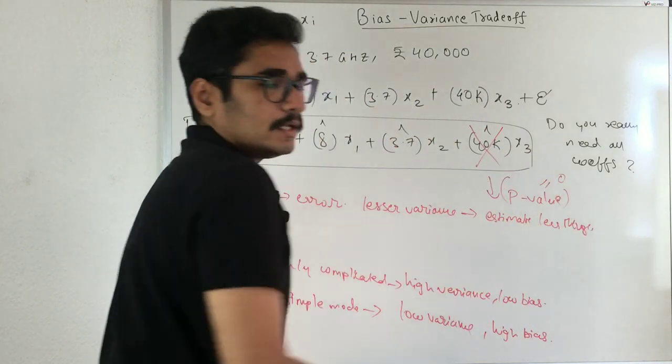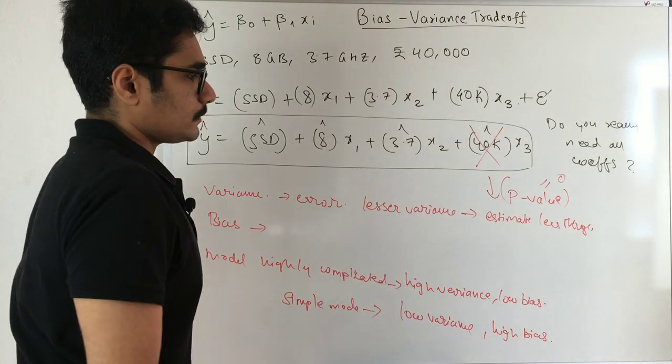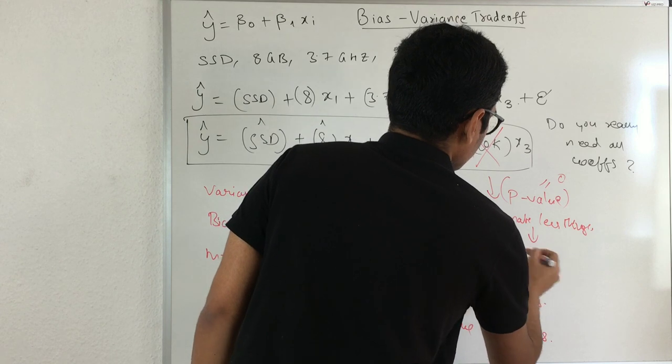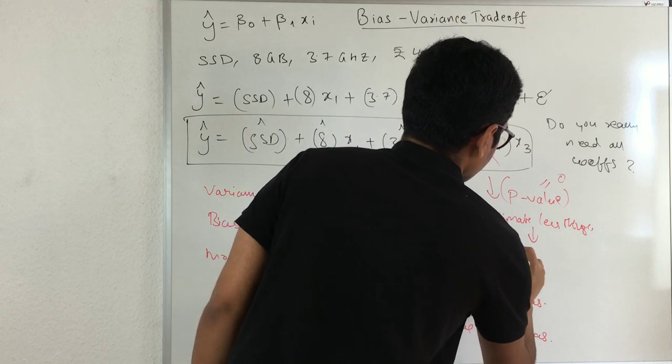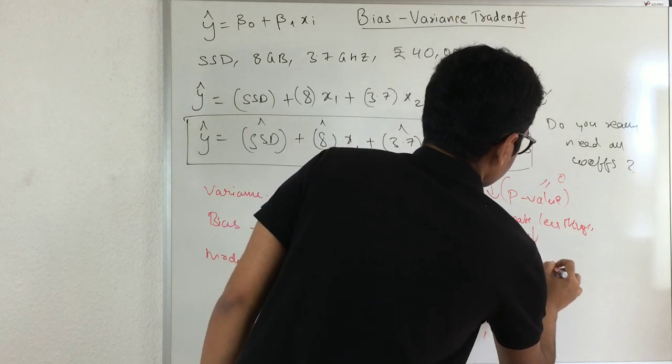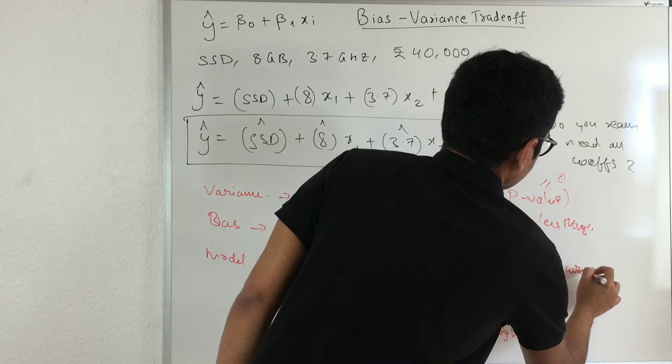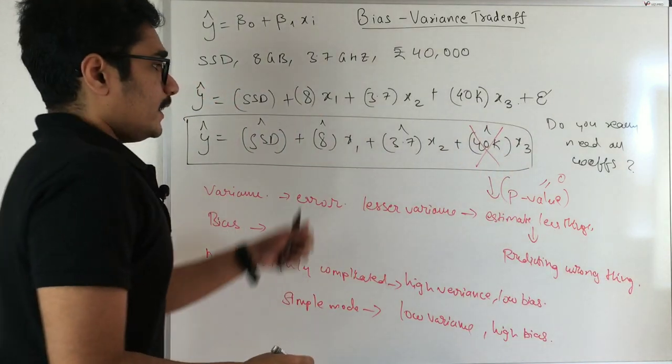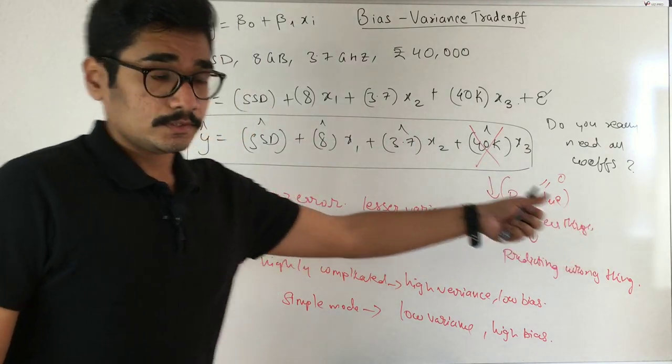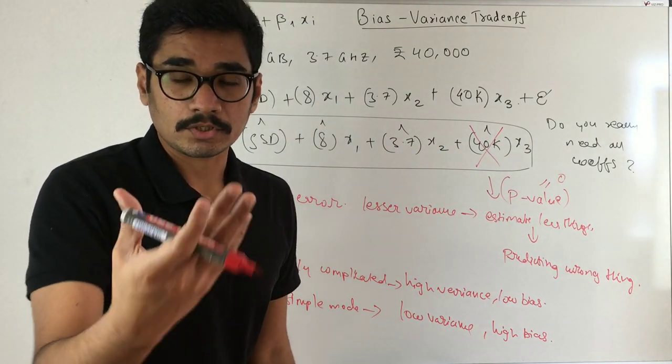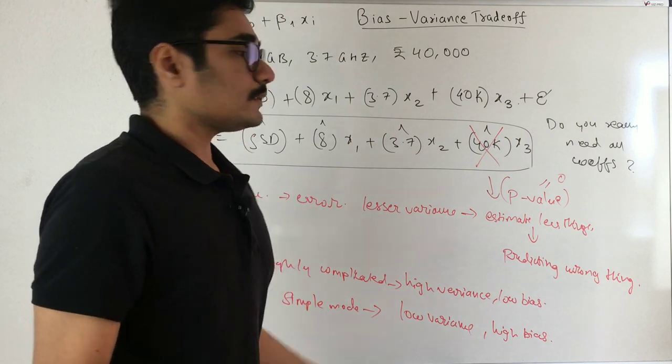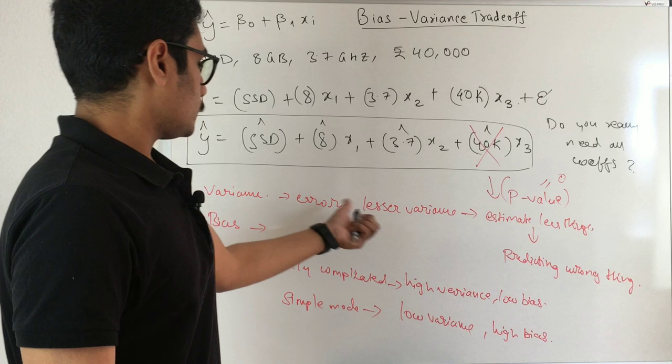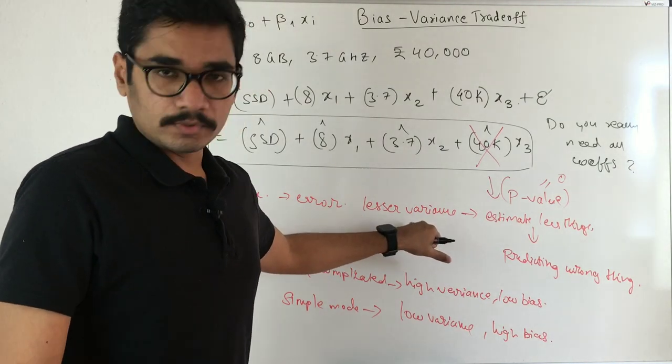But as soon as you estimate less things, you are predicting the wrong thing. By giving all four features, your model could predict to the right configuration or the right laptop. But since you are dropping one, you are predicting something wrong because you are very much concerned about the variance.